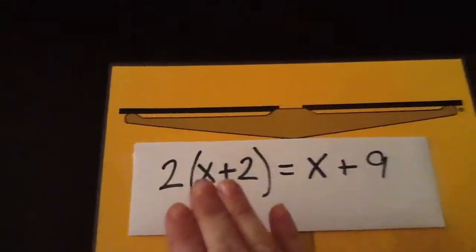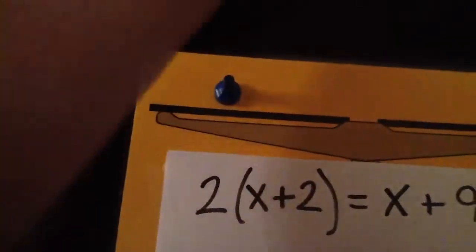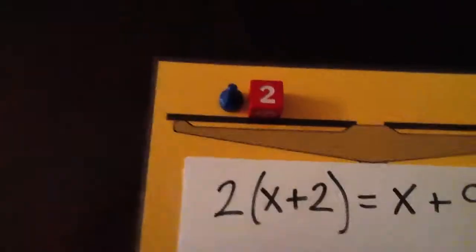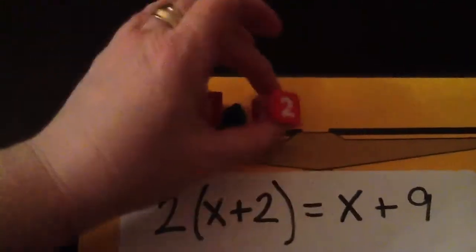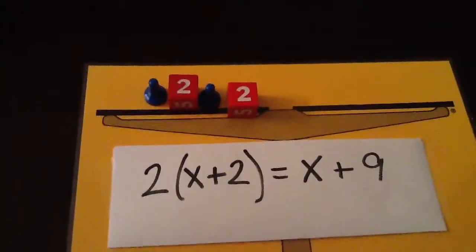So we need an x plus 2 and then another x plus 2. Alright, so we're going to get our pieces together. We have an x plus 2, and then we'll get another x plus 2. So we have 2 x plus 2's.